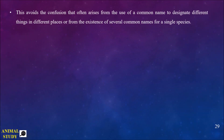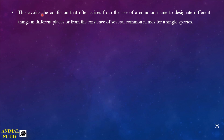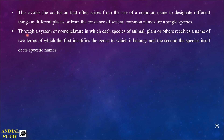Binomial nomenclature removes a lot of confusion, such as the confusion caused by common names where different things have different names in different places. Because of this, a single thing can have many common names, which can create confusion. To avoid this, biologists created the binomial nomenclature system. In this system, all species — whether of animals, plants, or any other — are given one name based on two terms. The first term tells us the genus it belongs to, while the second term of the scientific name is the species itself.